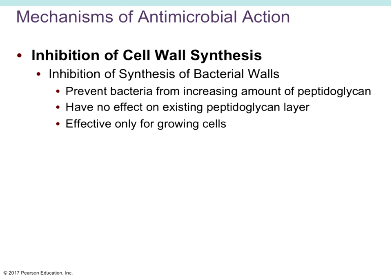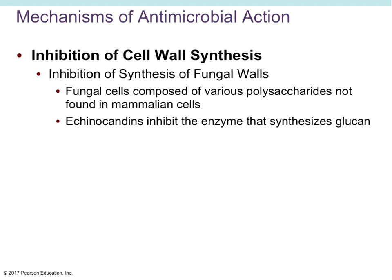When we inhibit cell wall synthesis, we prevent the bacteria from increasing the amount of peptidoglycan. The inhibitors don't affect the existing peptidoglycan layer, but they keep new peptidoglycan from being formed if there is damage. They're only really effective for cells in the growing stage that are trying to make more peptidoglycan — so the very early stage of an infection is when these are going to be most effective, when we catch it while the cells are still growing in numbers.